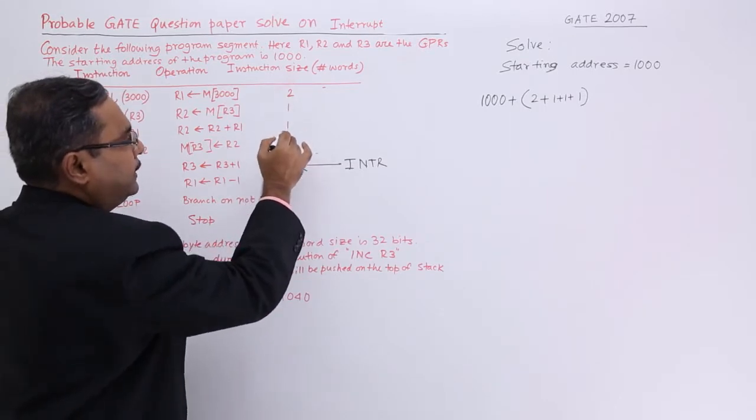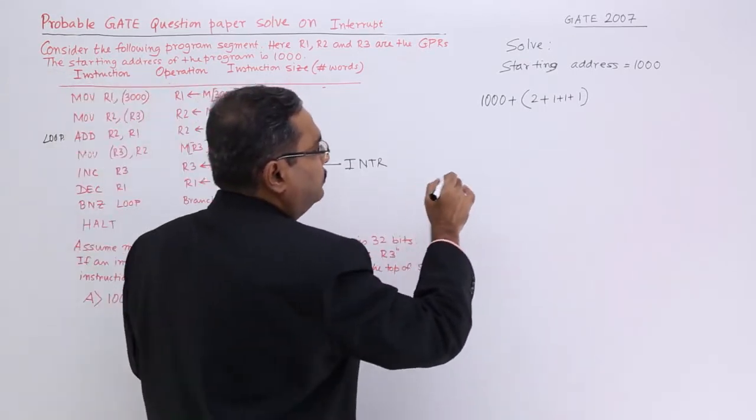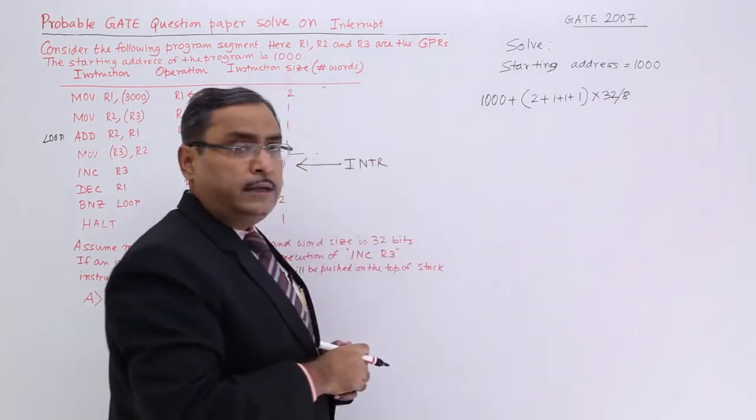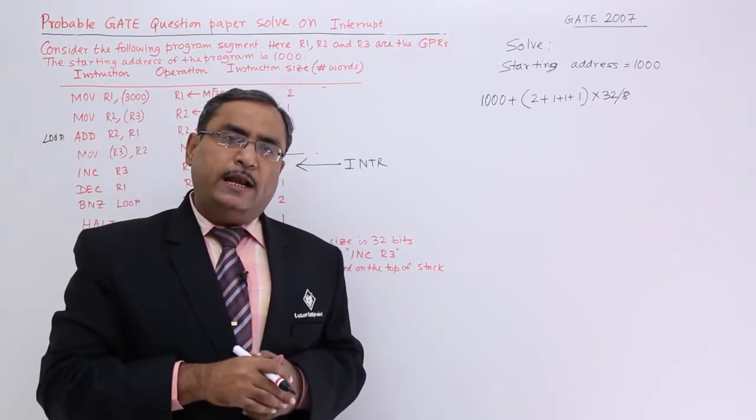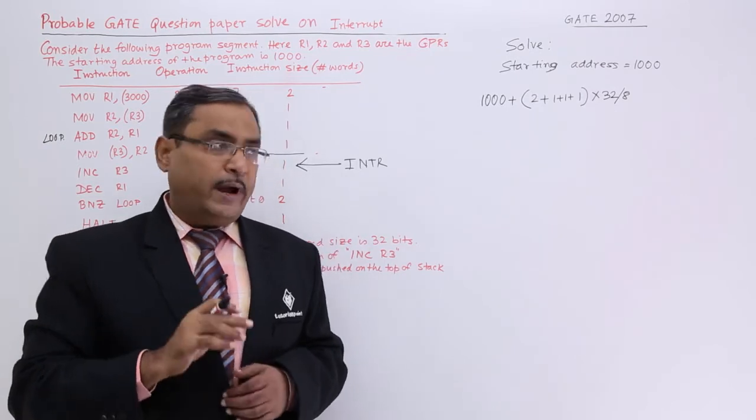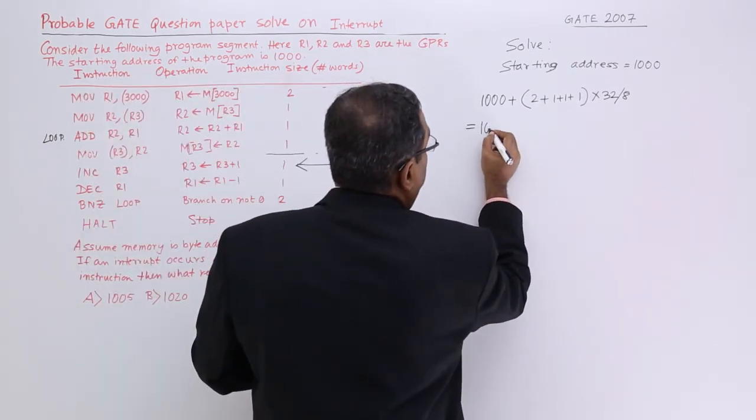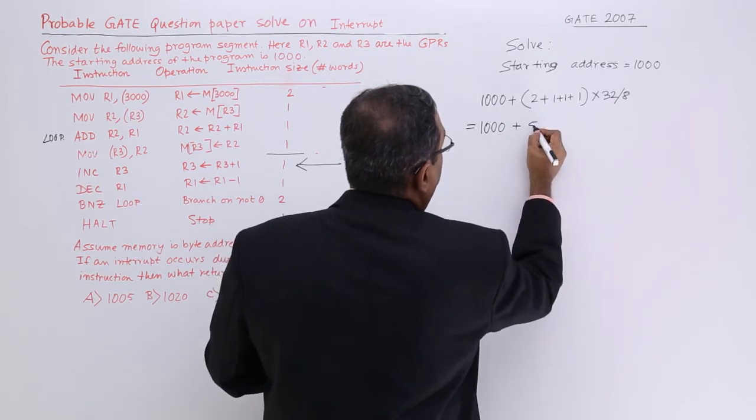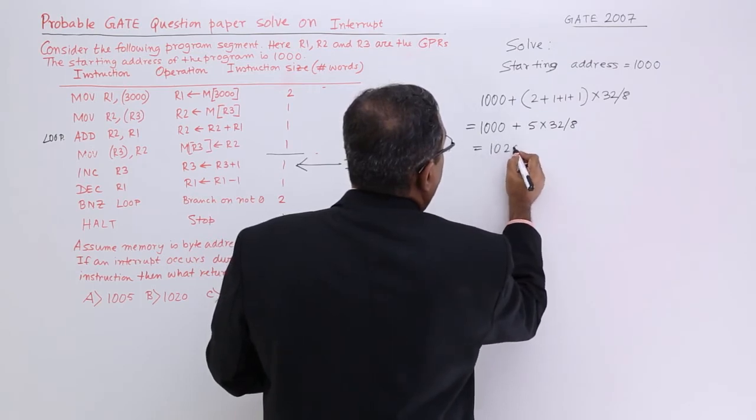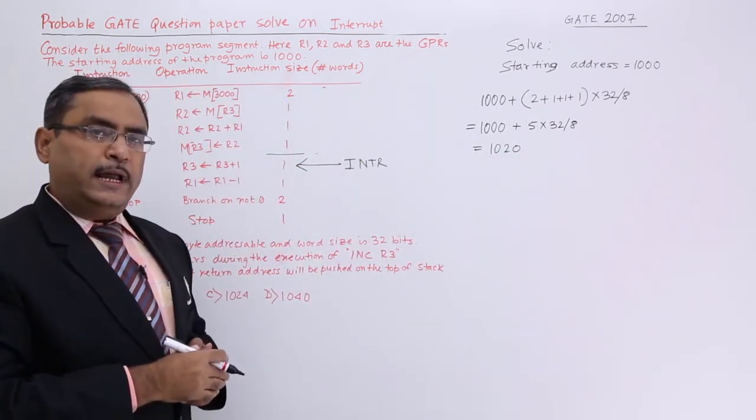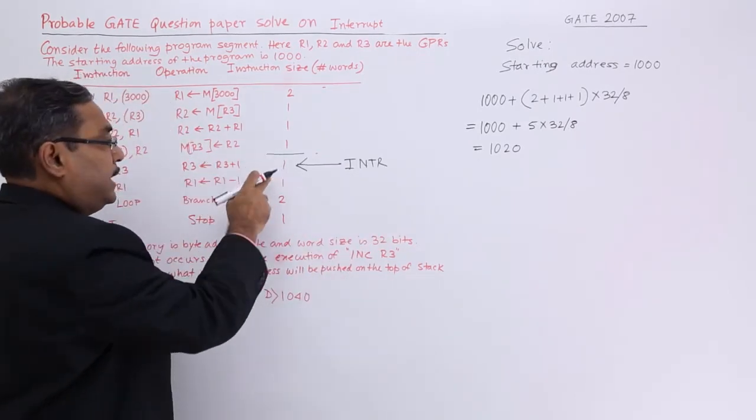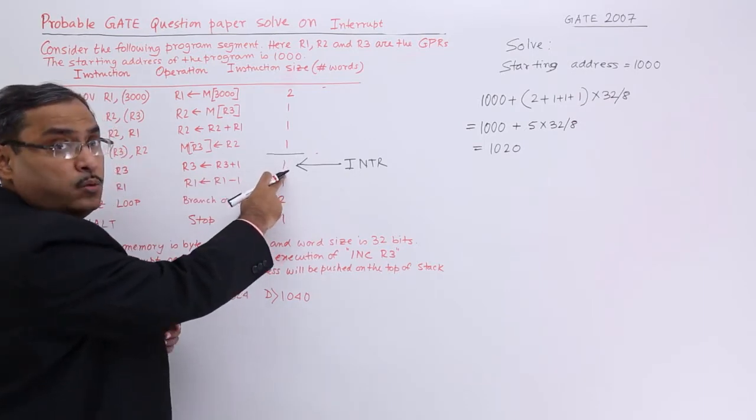Now it will be multiplied by 32 and should be divided by 8. Because 32 bits per instruction and 8 bits per memory location. So what is the instruction with 4 bytes? What will be the value then? Then it is nothing but 5 into 32 by 8 so that is 1020. So 1020 will be the address.